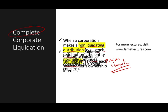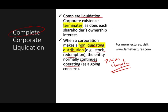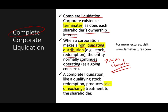In a complete liquidation, that's totally different. The company ceases to exist, as does the shareholder's interest in the company — it's done. A complete liquidation is treated like a qualifying stock redemption, which means the transaction produces a sale or exchange treatment to the shareholder. You are selling your stocks, and because of that you're going to have a capital gain or a capital loss.